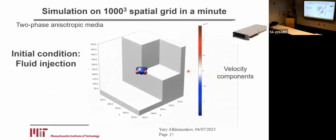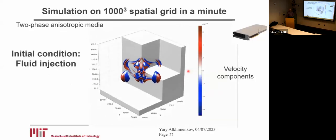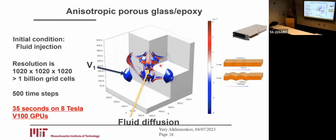Now I would like to show you this short movie. We set the initial condition to fluid injection into the center of the model, and it resulted in propagating waves and also fluid pressure diffusion in the middle.